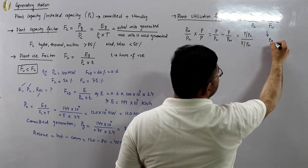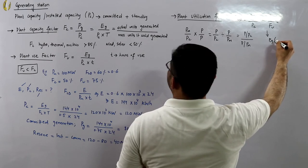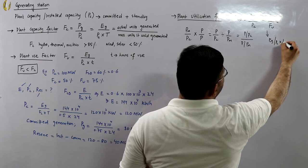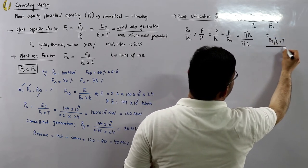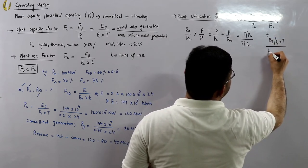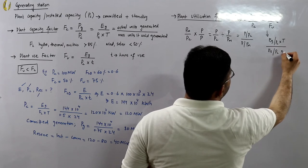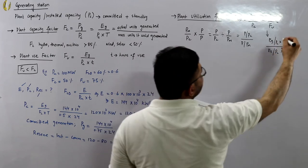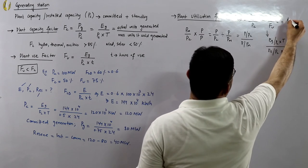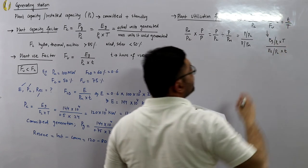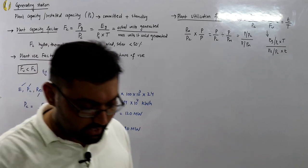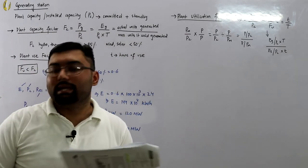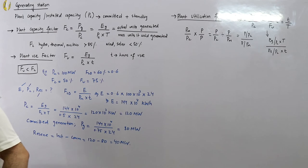Looking at the equations, the plant capacity factor uses EG divided by PC times capital T, and the plant use factor uses EG divided by PC times small t. When you cancel the common terms, the utilization factor also equals small t divided by capital T, where small t is the time of operation and capital T is the overall time period.